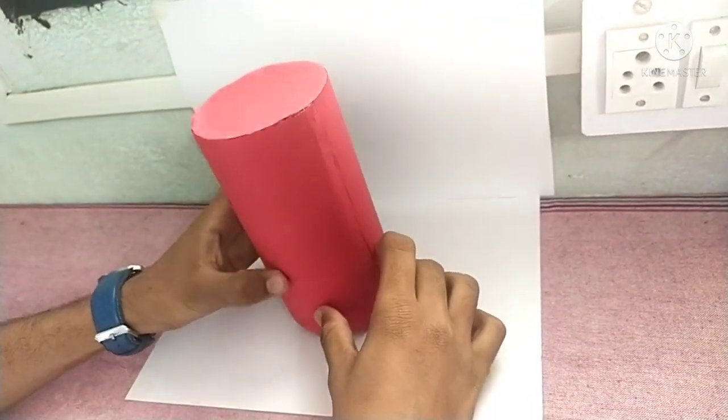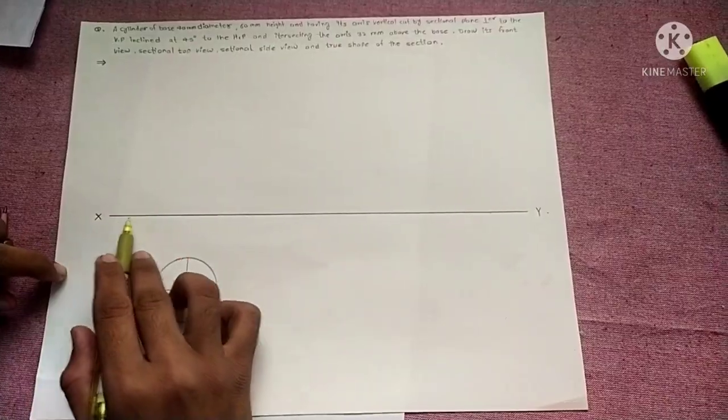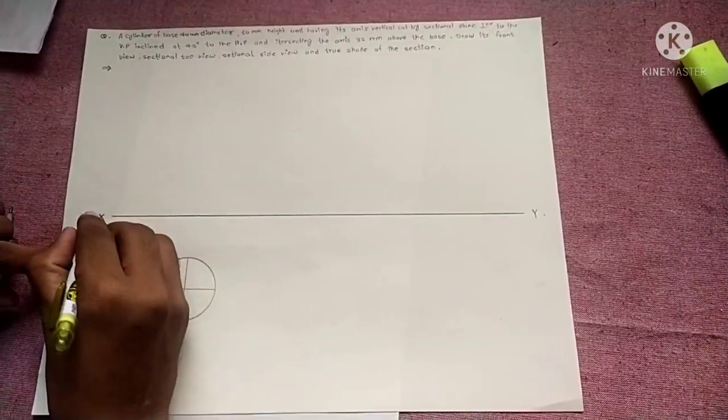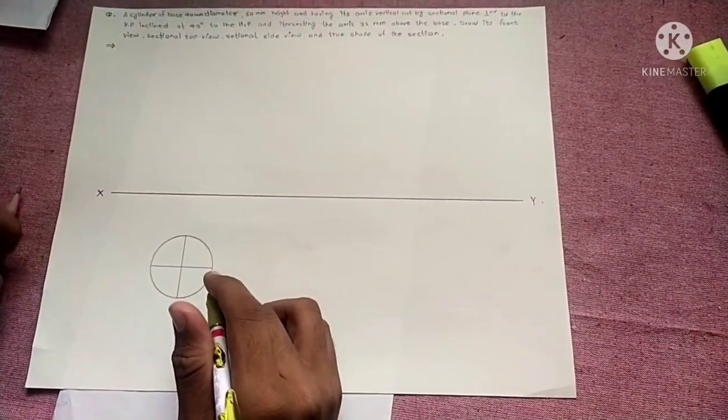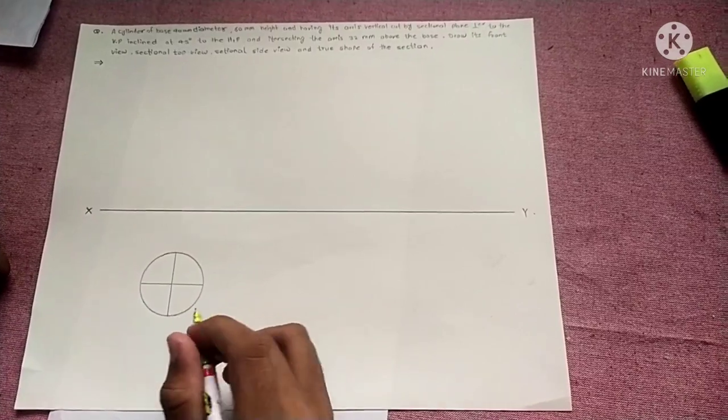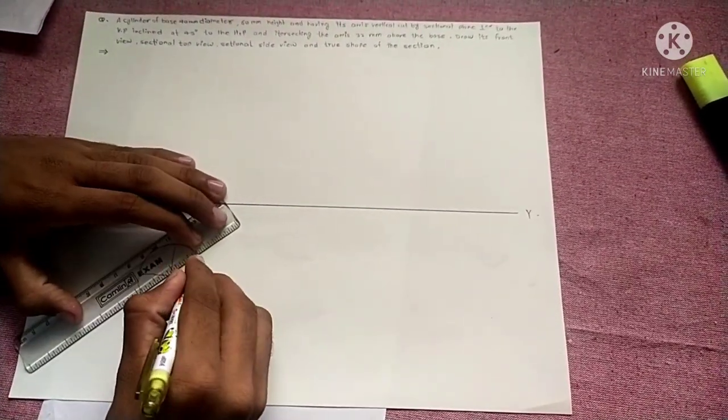In this question, we will make top view and front view of the remaining part. This is XY line. This is X and this is Y. This cylinder base is 40 mm diameter. This is part of the cylinder.